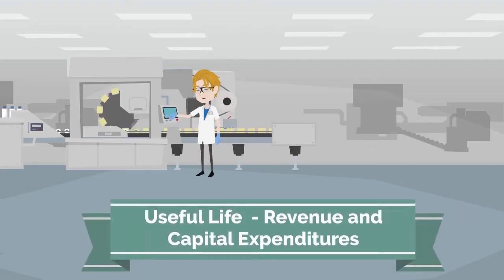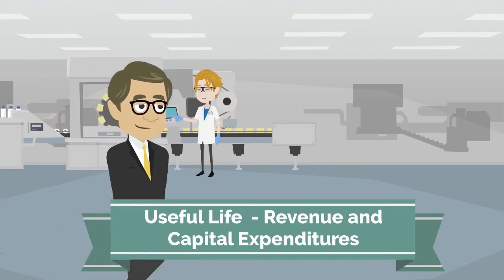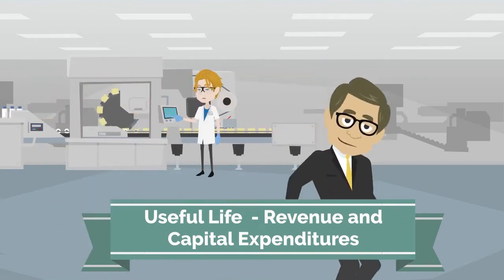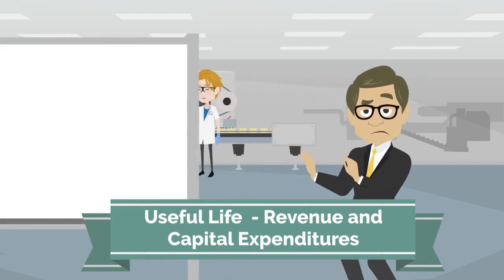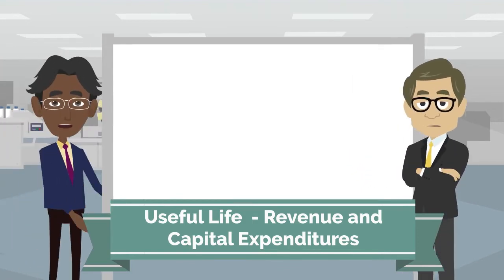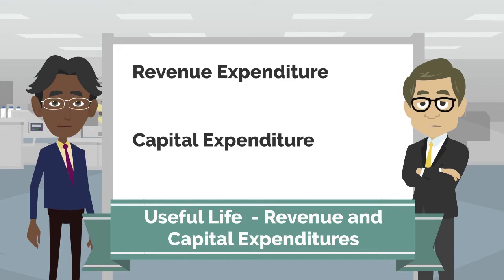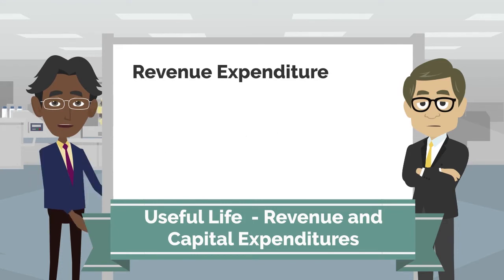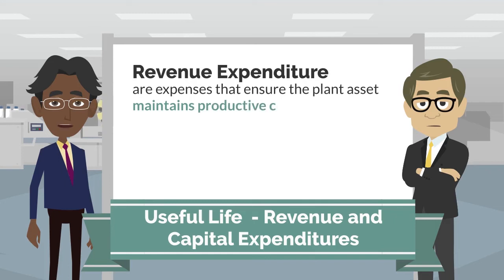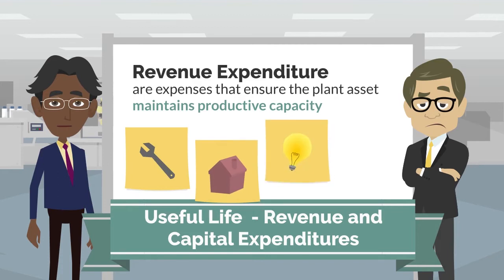Next, over the course of the useful life of a plant asset, a company may incur expenditures in using the assets. During an asset's useful life, the company may need to incur a revenue expenditure or a capital expenditure. The first one, revenue expenditures, are expenses that ensure the plant asset maintains productive capacity. This includes expenses relating to maintenance and repairs, rent, utilities, and office supplies.